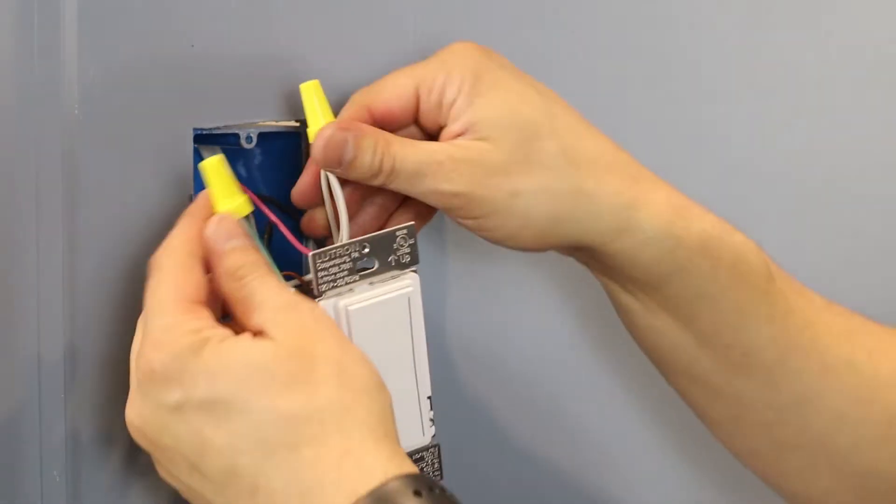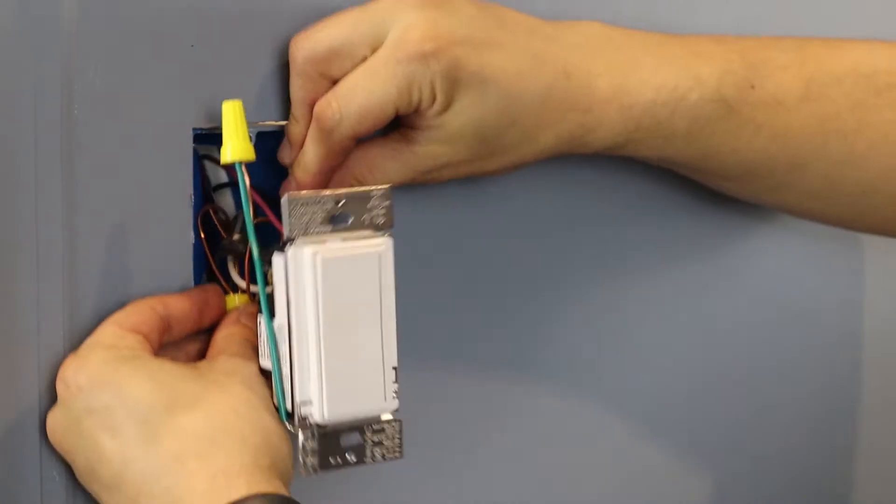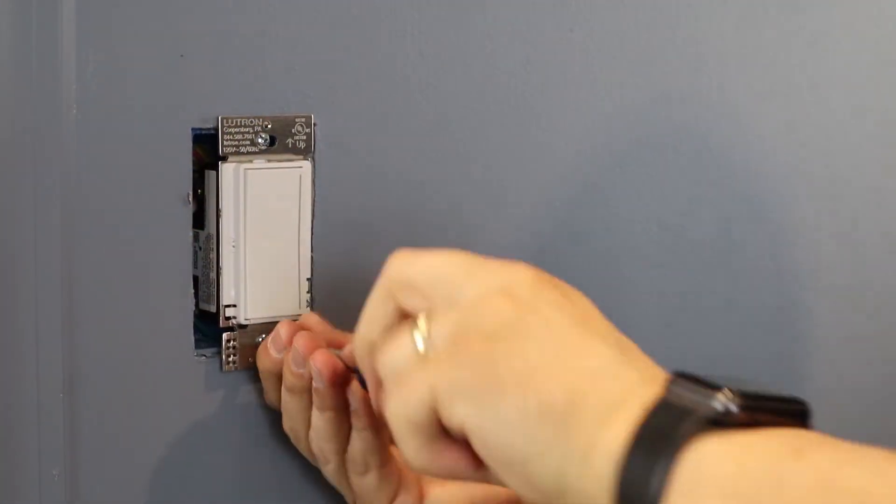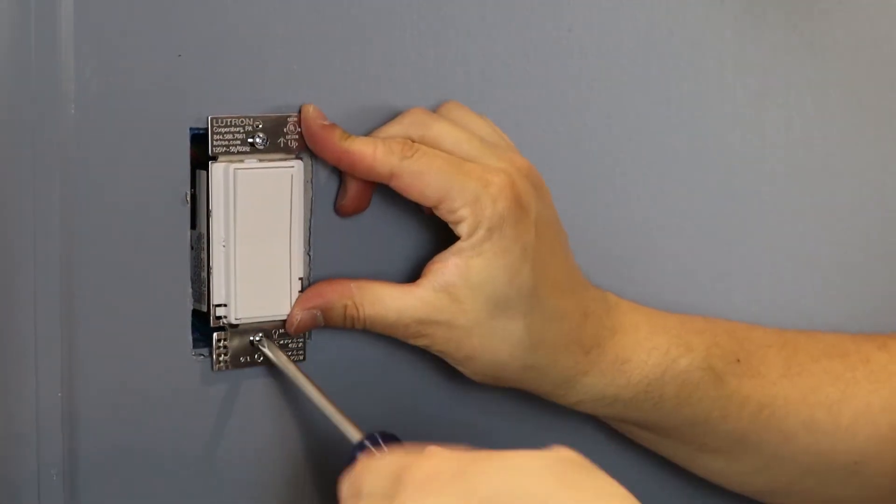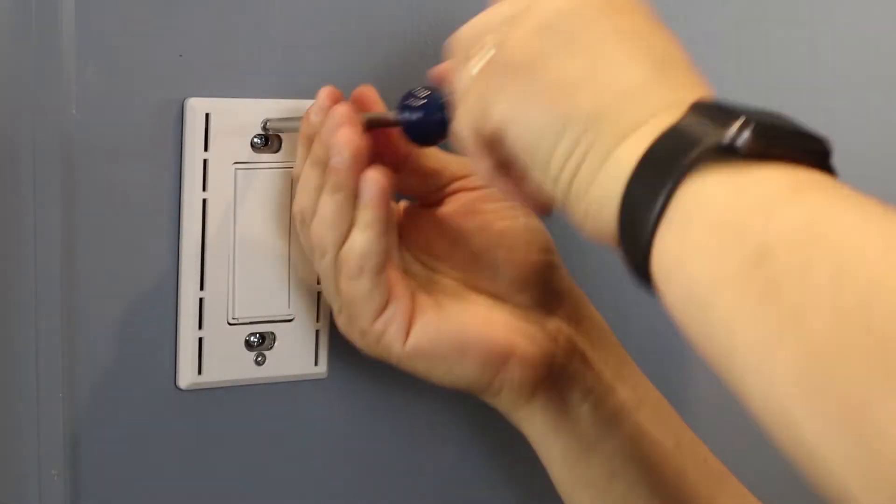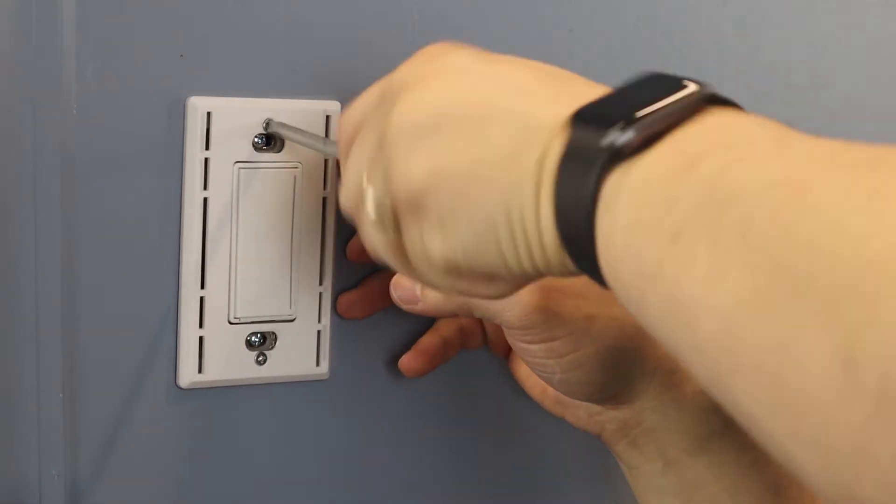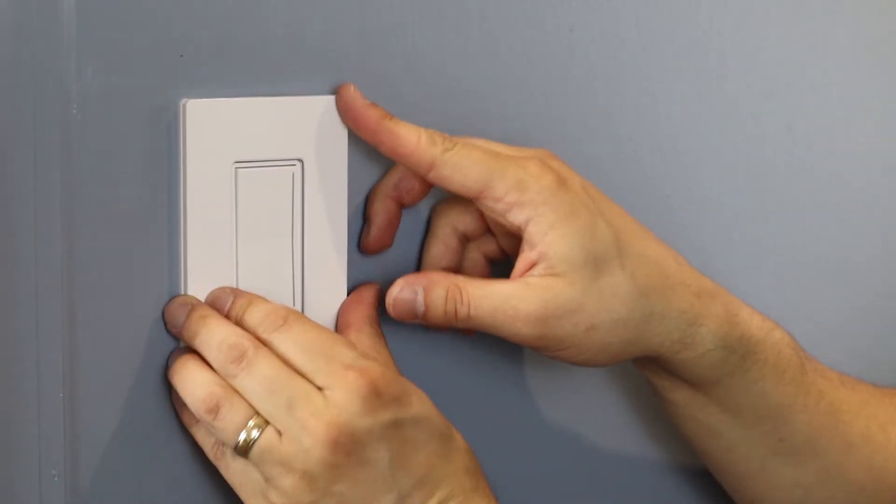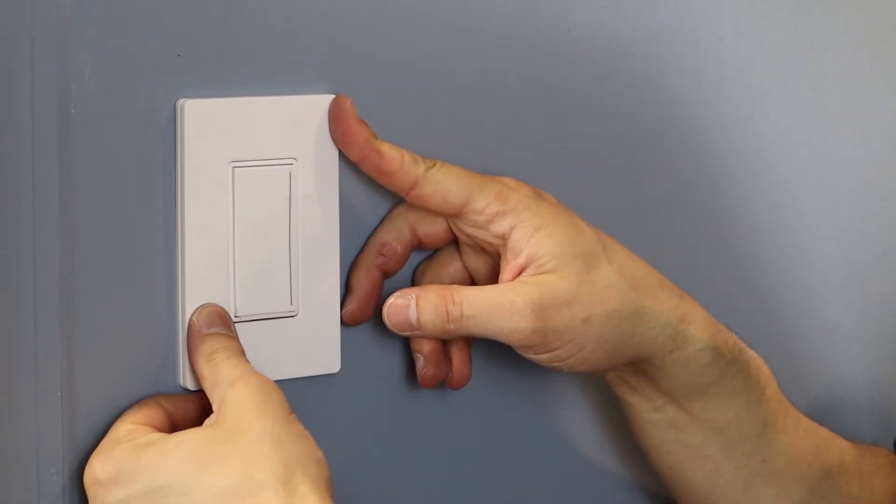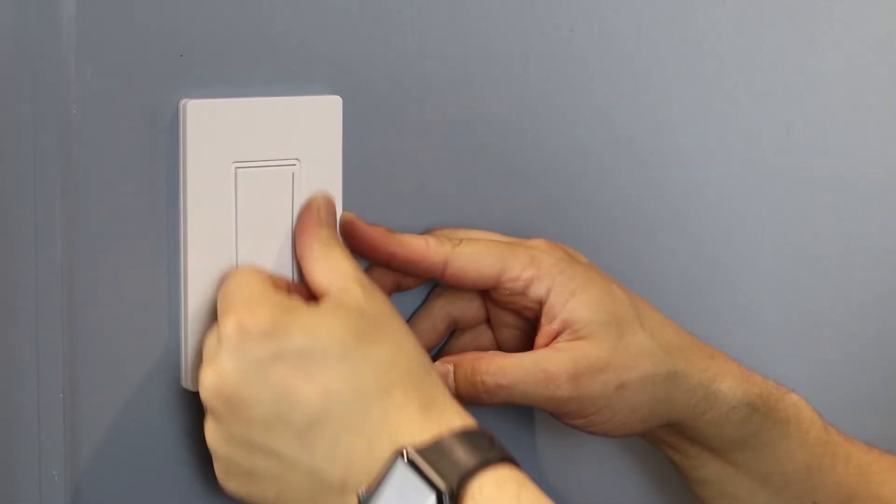Once your main dimmer is connected, you can push the wires back into the wall and attach your dimmer to the wall box. Now that we've installed the main dimmer, we're going to go over to the other three-way location to install a companion dimmer.